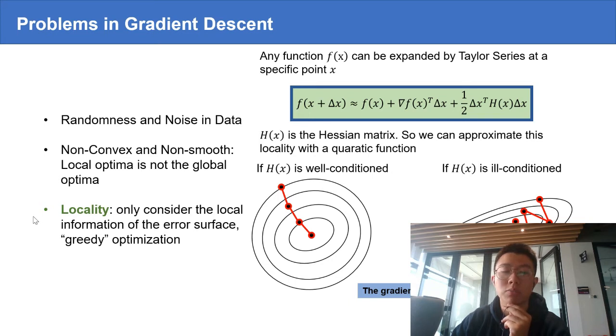For example, by approximating the local error surface with a quadratic function, when the Hessian matrix is ill-conditioned, the gradient could be with large variance.